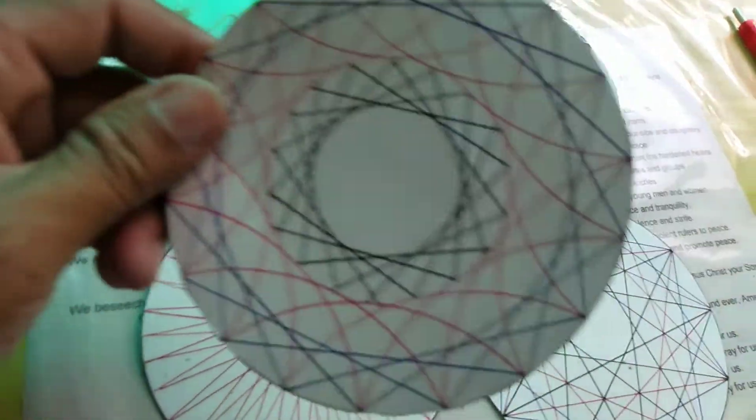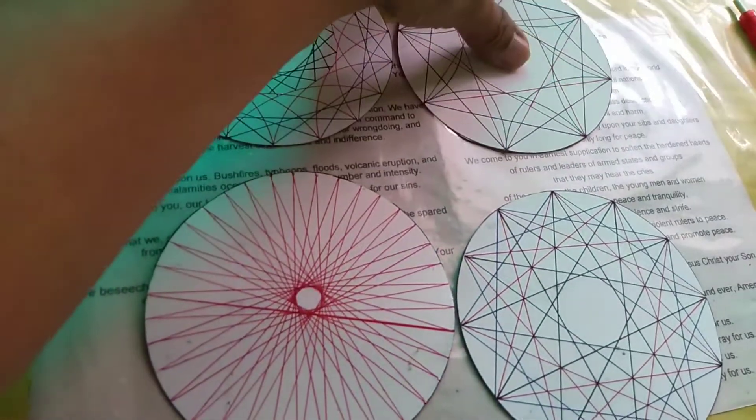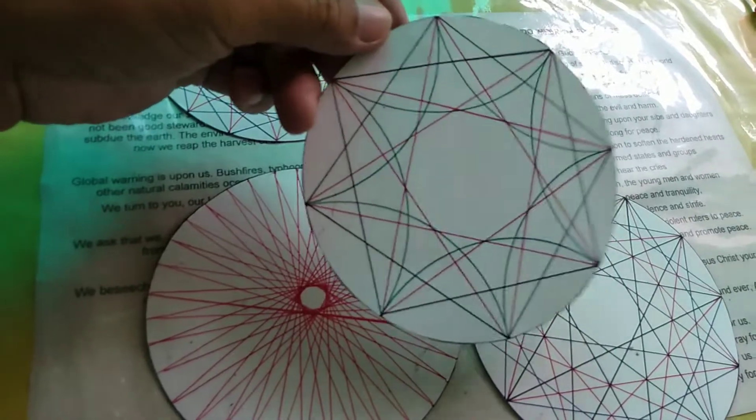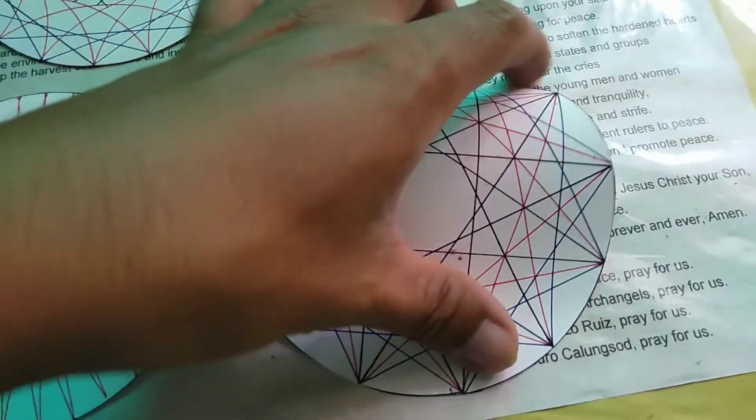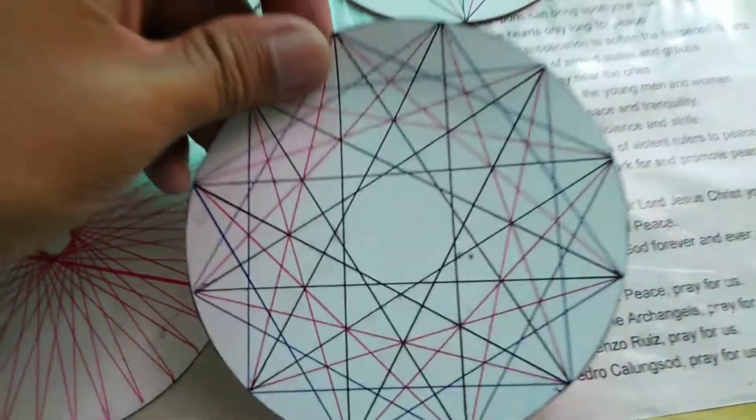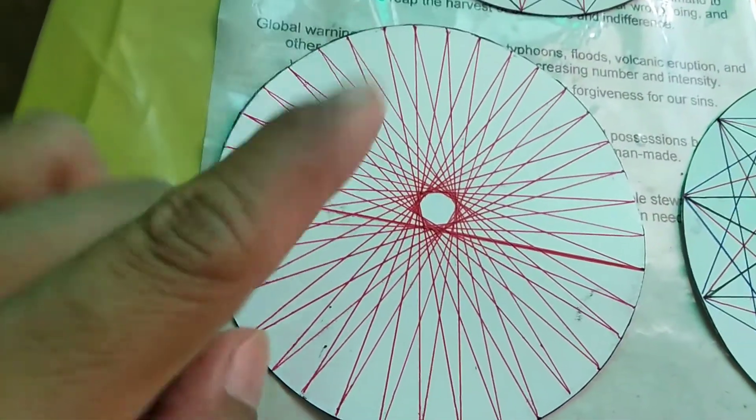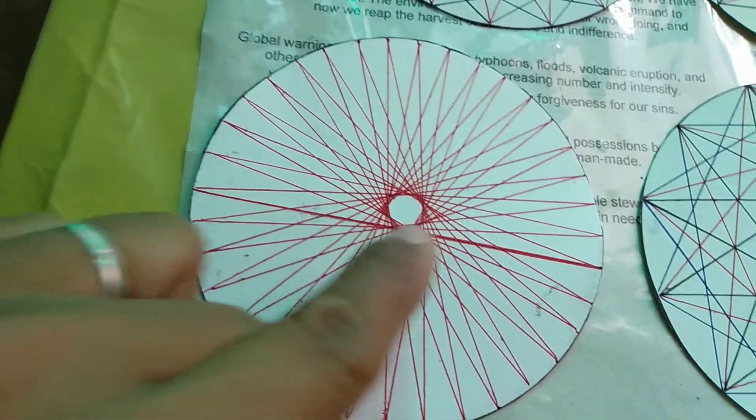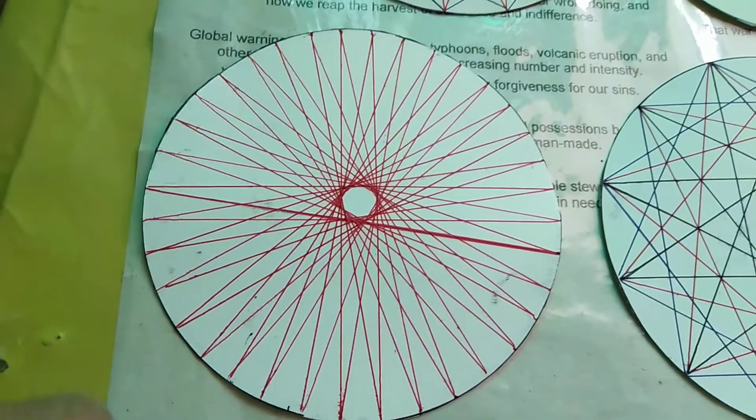And here you go, our final product. This is 20 degrees. This is 45 degrees. And 30 degrees. That's 30 degrees. And the 10 degrees, where I made one line mistake. I made a mistake on one line.